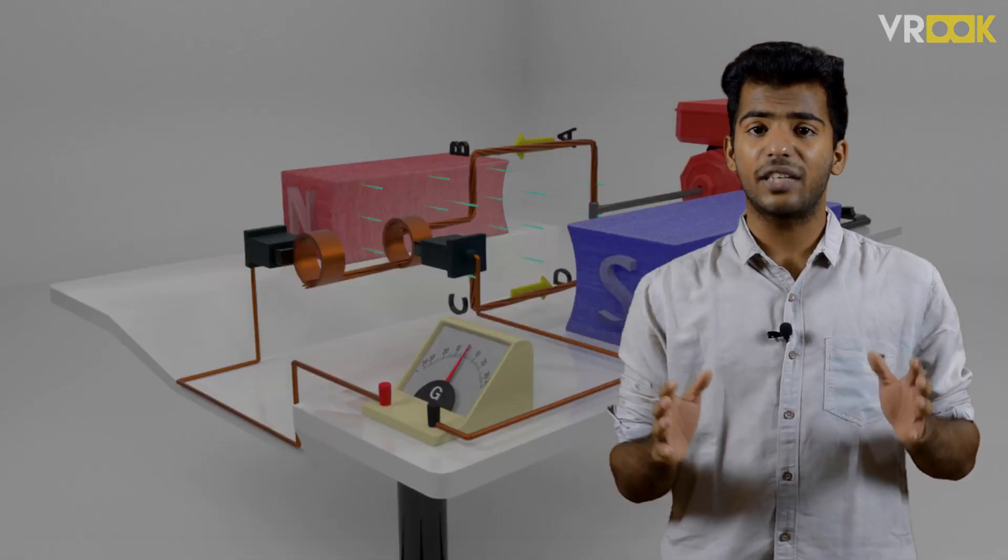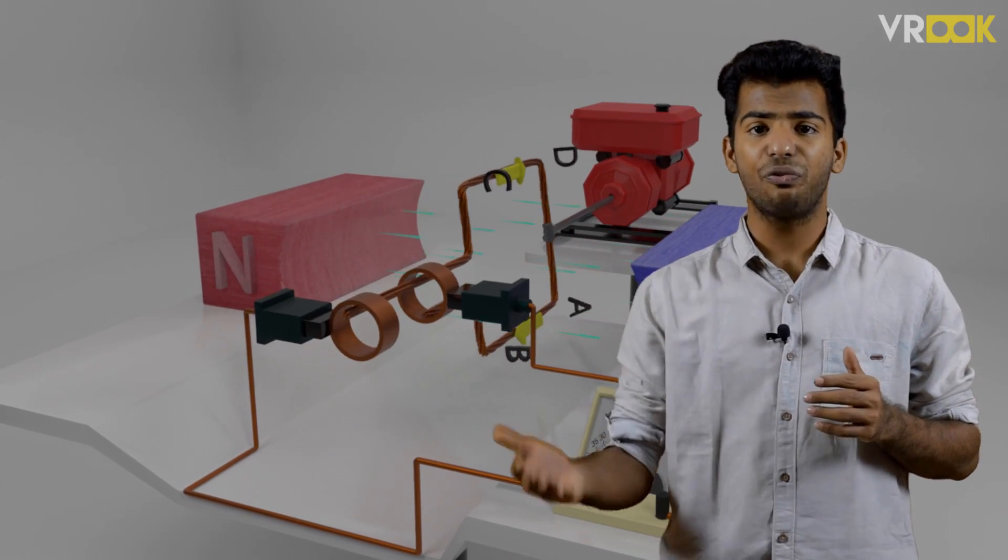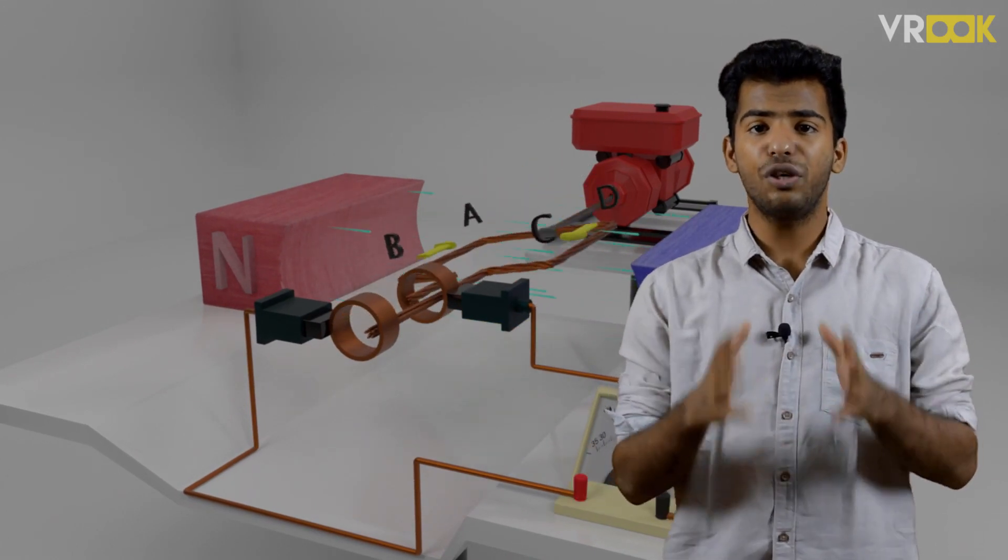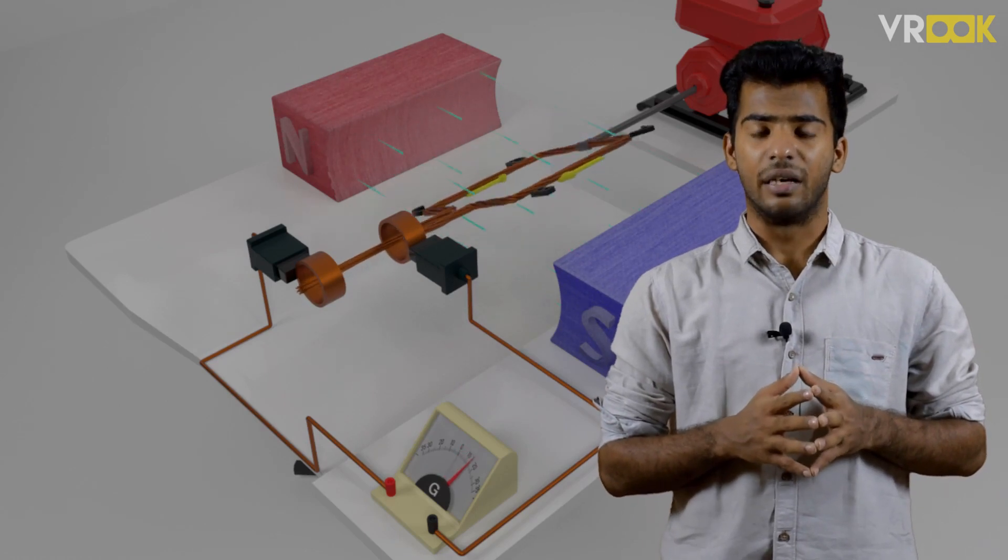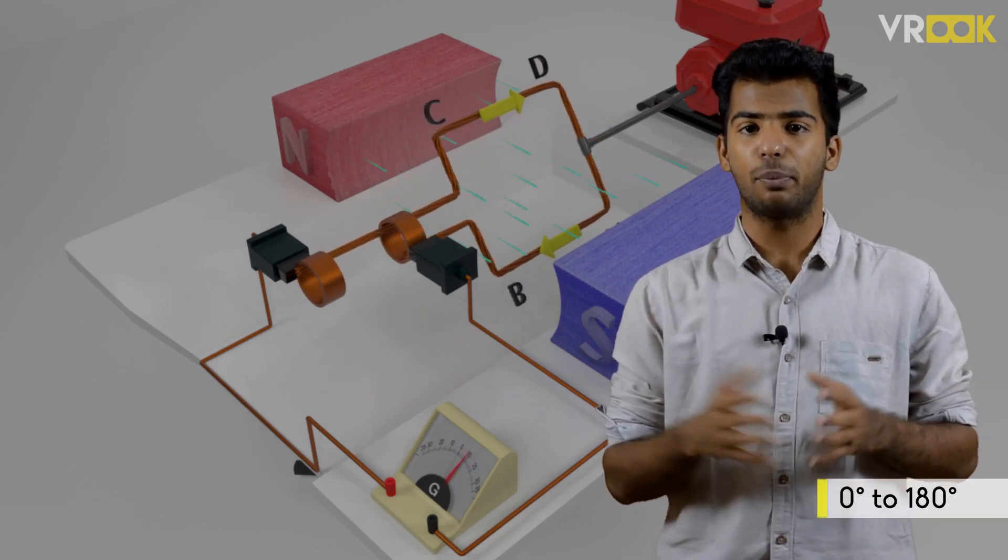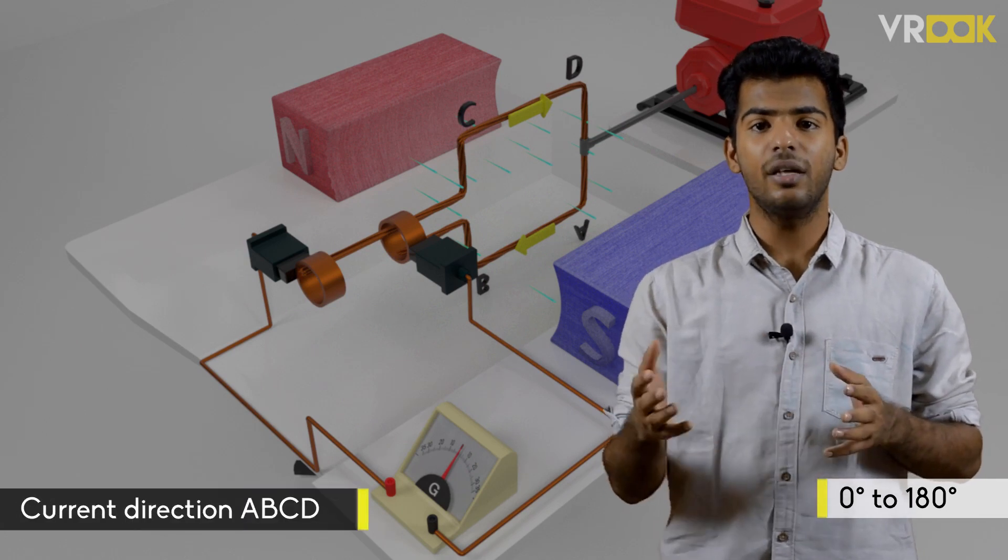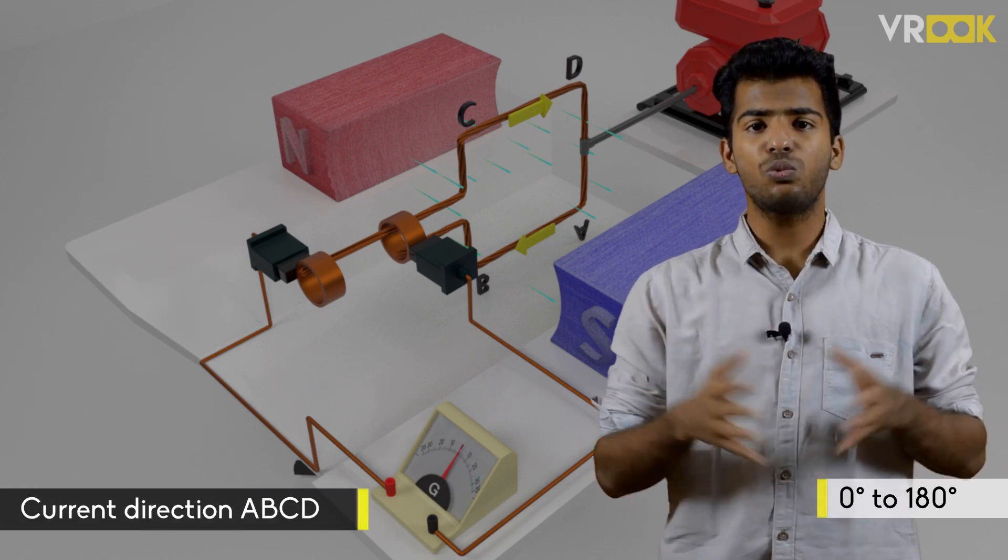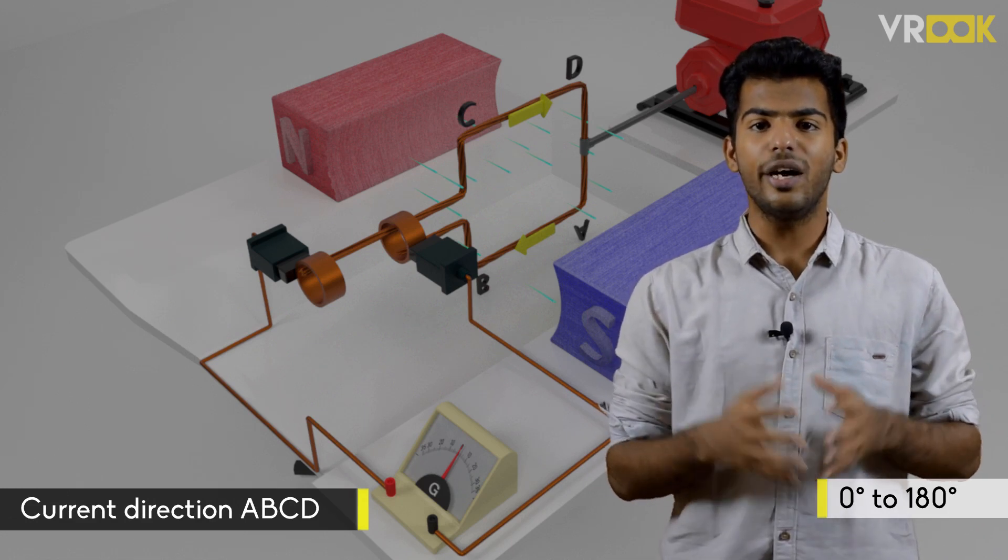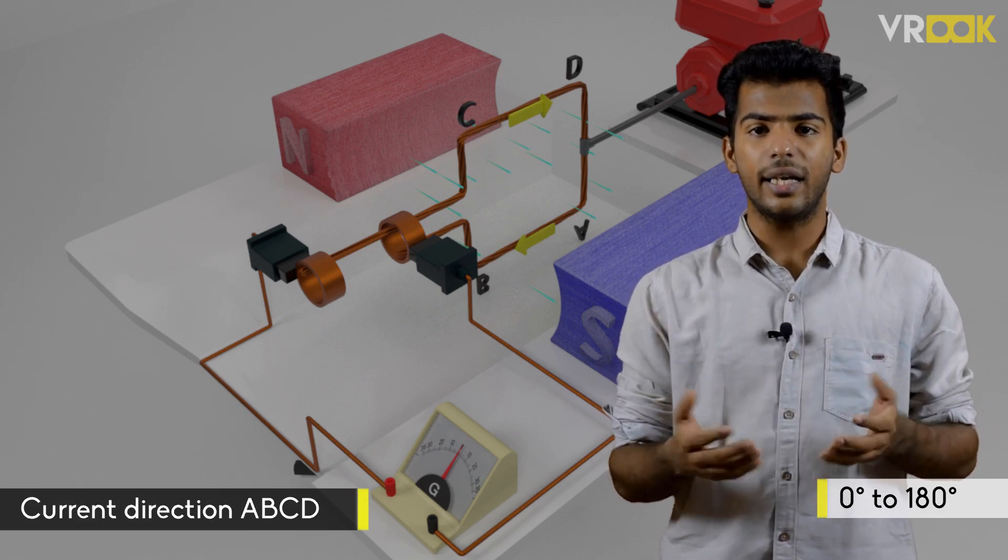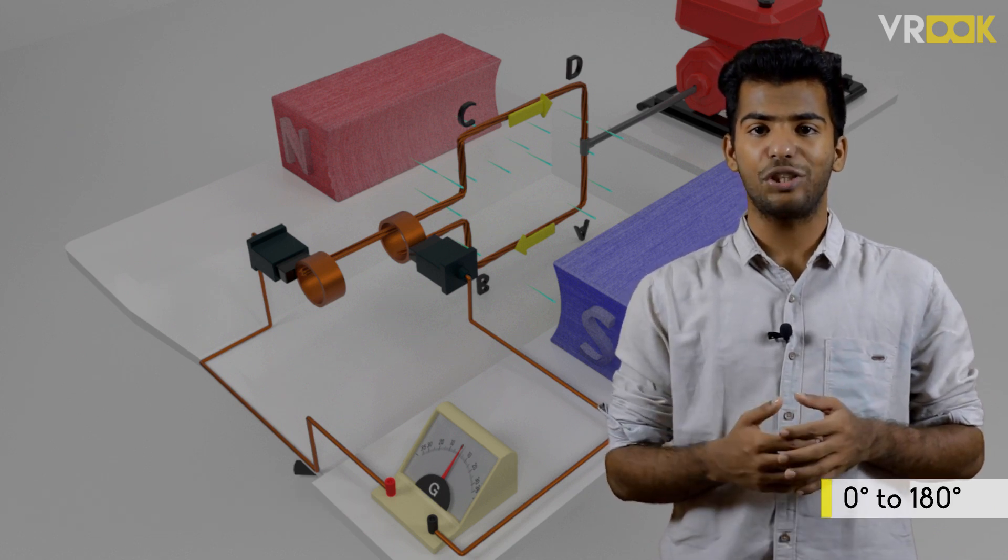One of the most key facts we observed was, the current changed its direction halfway through the cycle. We should know how it happens. When the conductor is travelling from 0 degrees to 180 degree position, the current direction in the loop will be AB to CD. This is validated by Fleming's right-hand rule. According to the rule, as the conductor AB is moving down, we should get the current in the direction AB.